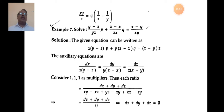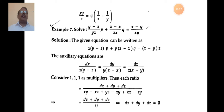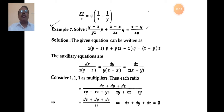Write the auxiliary equation: dx / x(y−z) = dy / y(z−x) = dz / z(x−y). The grouping method is not easily applicable here, so we use the multipliers method. Take multipliers 1, 1, 1. The combined ratio is (dx + dy + dz) / [x(y−z) + y(z−x) + z(x−y)].